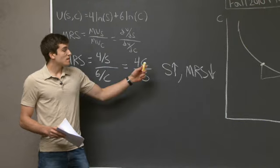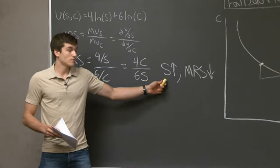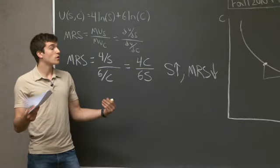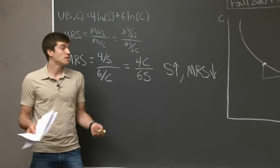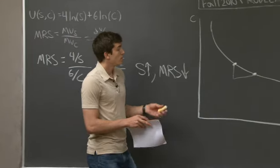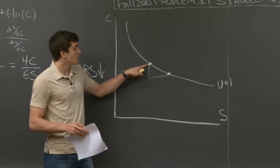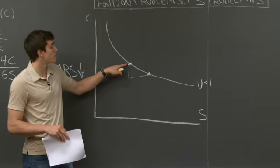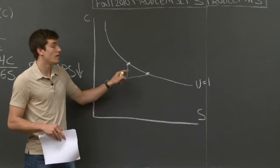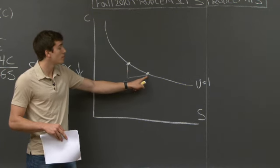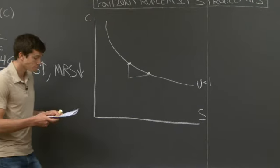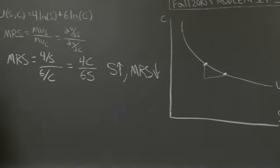As she has more software, she's willing to give up fewer clothing to get another unit of software. Looking at the graph, when she's at a point with less software, she's more willing to give up clothing to get more software. But when she has more software, she's less willing to give up clothing.